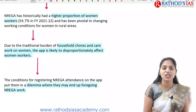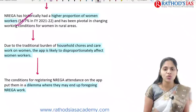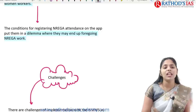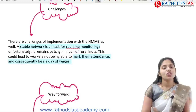MGNREGA has historically had a higher proportion of women workers — about 54%. Women also have to attend to other work like household work and care work. Because of this, the app disproportionately affects women workers, and the conditions for registering attendance on the app put them in a dilemma.